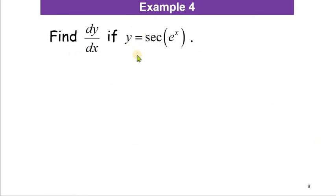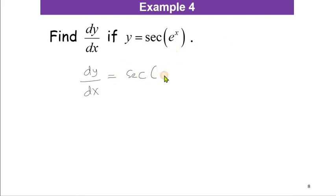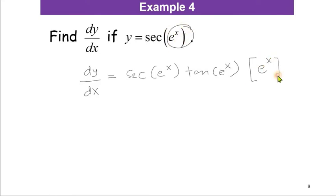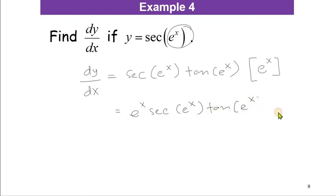For Example 4: find dy/dx if y = sec(eˣ). Differentiating sec gives sec tan, and the angle follows, so we have sec(eˣ) tan(eˣ). Then we differentiate the angle eˣ, which gives eˣ. Rearranging, dy/dx = eˣ sec(eˣ) tan(eˣ). This is the answer.